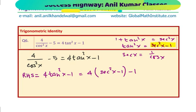What is secant? Secant is 1 over cos. Therefore, I could write this as 4 times 1 over cos square x minus 1 minus 1.